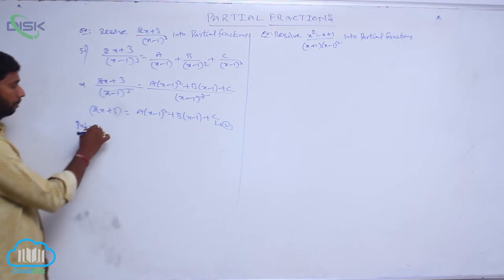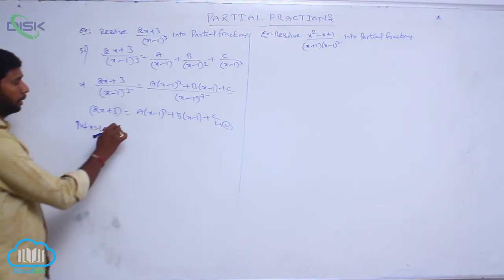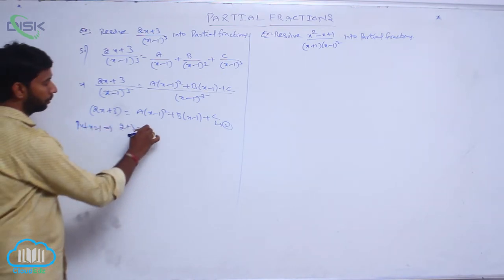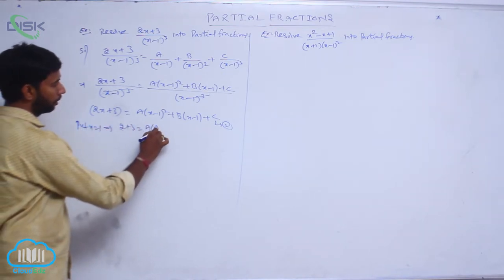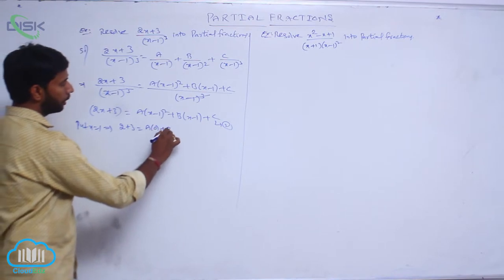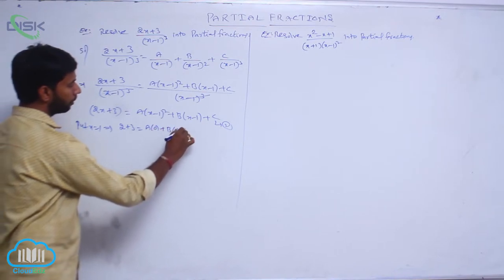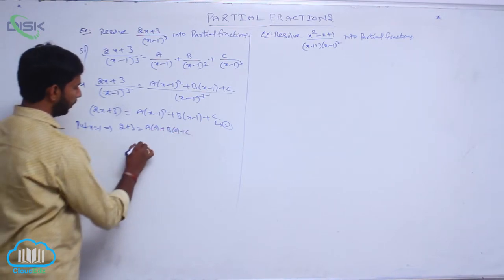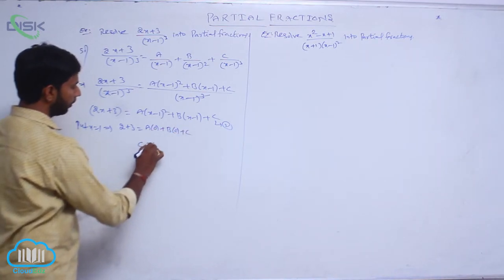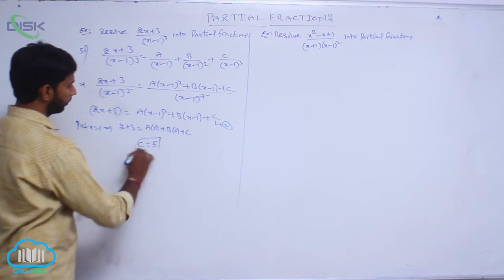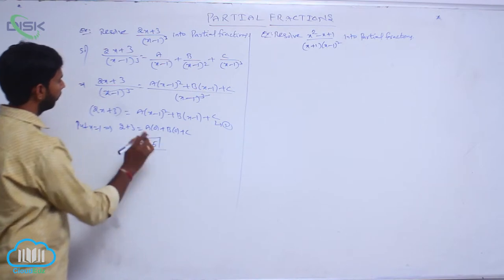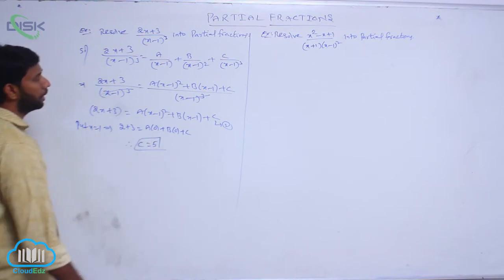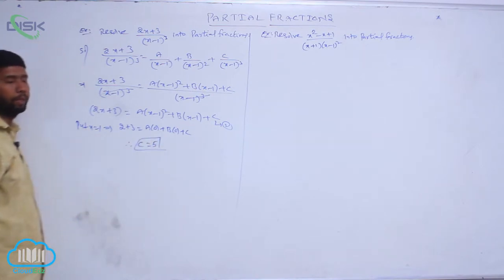Substituting x = 1 into condition 2: 2(1) + 3 = A(0)² + B(0) + C, so 5 = C. Therefore, C = 5.